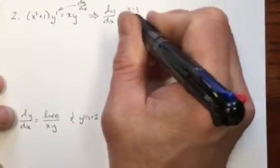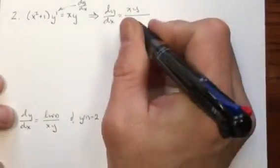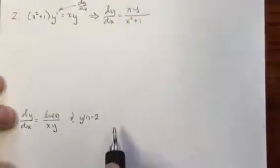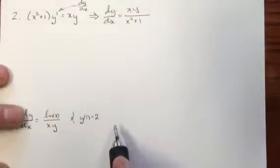well if I write xy over, and then I divide this, x squared plus 1, now the question is just how do we separate those?